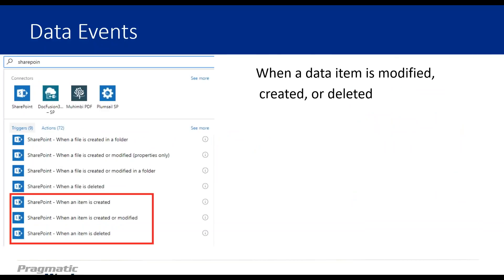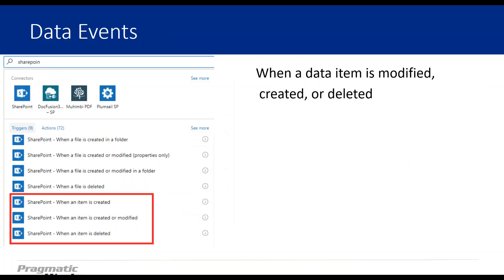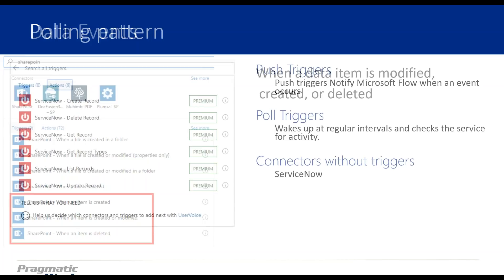An interesting aspect is data events. When a data item is modified, created, or deleted, that's one of our action types. Whenever an action occurs and we reference a service or pull data from a service, we can get that information and Flow will hold on to it — we can then reference that data later on in the flow.